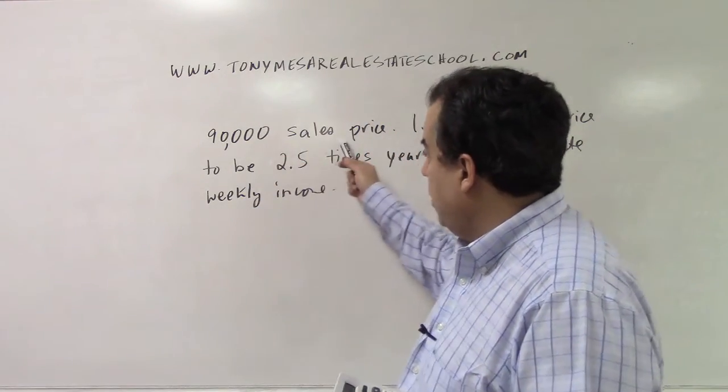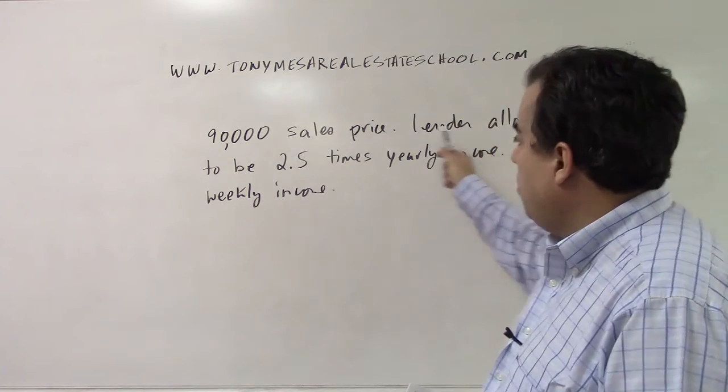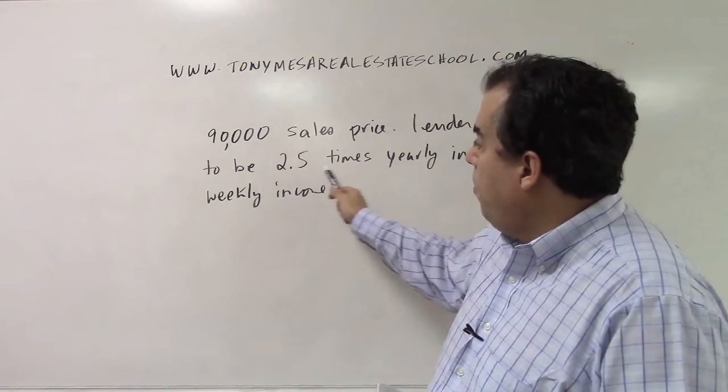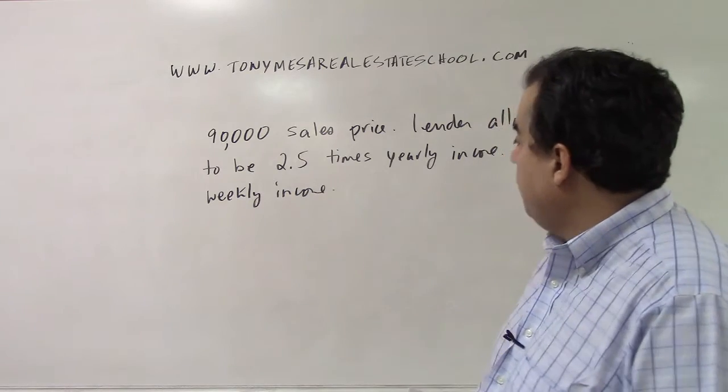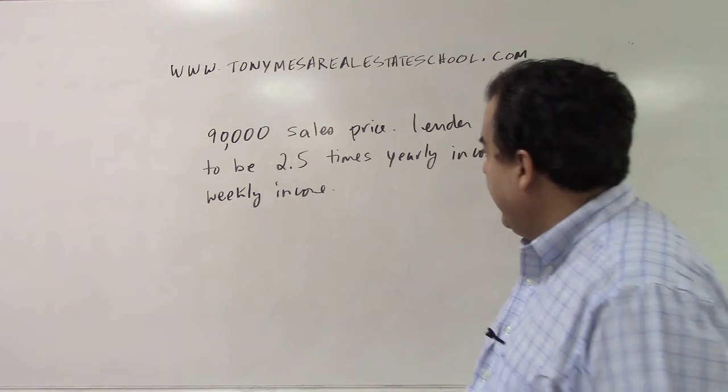So for example, $90,000 is the sales price. The lender allows the price to be 2.5 times yearly income. Calculate the weekly income.